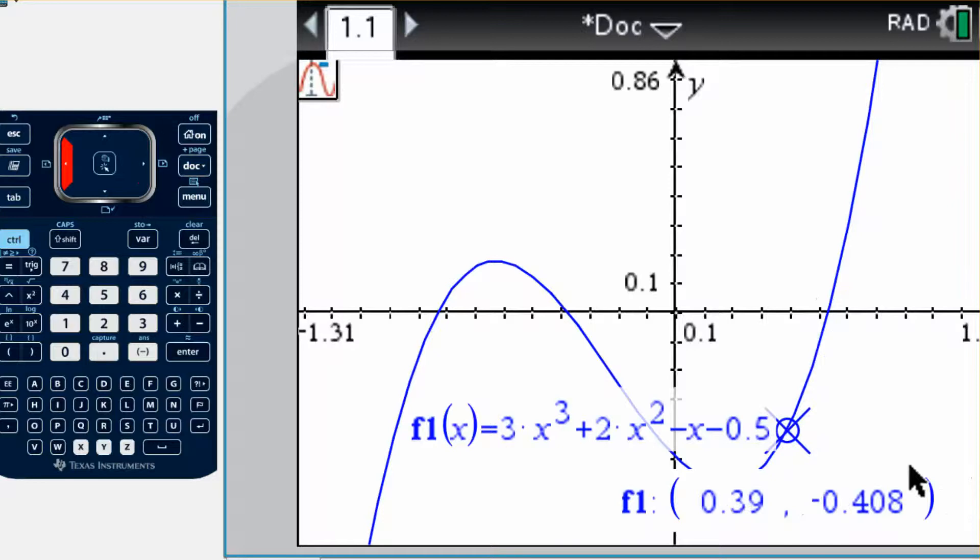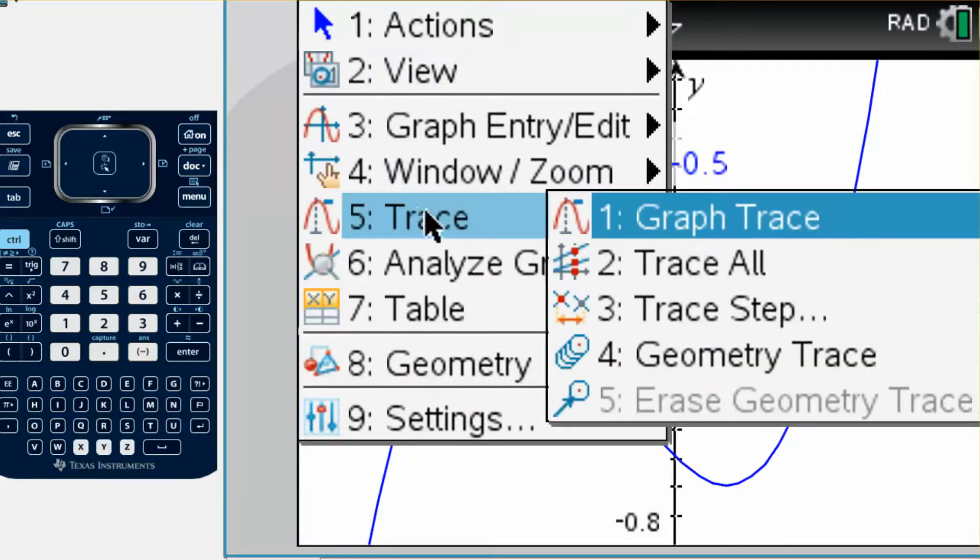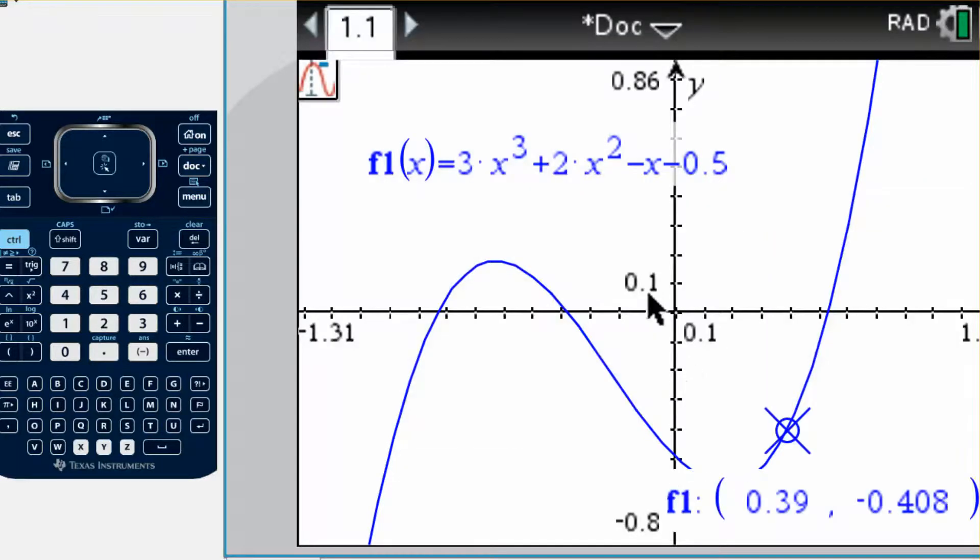If you want to find the y-intercept, I'm just going to back out so I can move my equation out of the way here. I'll go back to menu, trace, and if I move along the graph again, it'll pop up and say the y-intercept.